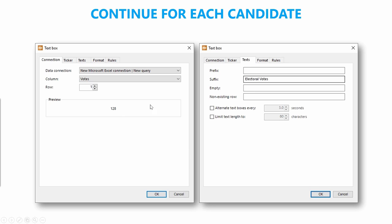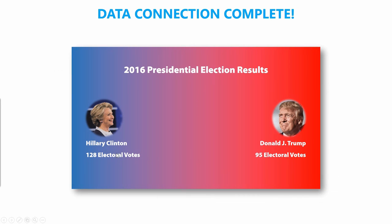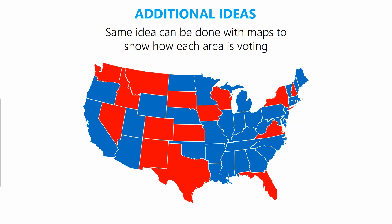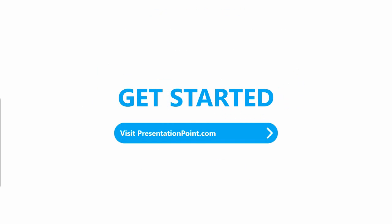If you want a suffix at the end of the number, click on the Text option at the top and it will give you an option to add a suffix or prefix — in this case you can add that the 128 refers to electoral votes. Once you've done this, you'll see the data connections are complete and it all shows up. This is a very simple setup but it will work and update automatically. You can also do this with maps to show how each area is voting, and show graphics as infographics. To find out more, visit presentationpoint.com.